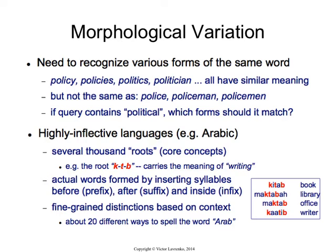European languages pale in comparison with Arabic. Arabic is effectively — I would argue it's the king of morphology because they've taken morphology to a whole new level. A typical European language has tens of thousands to a hundred thousand different roots, and then you take these roots and start appending suffixes onto them, and in some European languages prefixes as well. Eastern European languages like prefixes as well as suffixes.